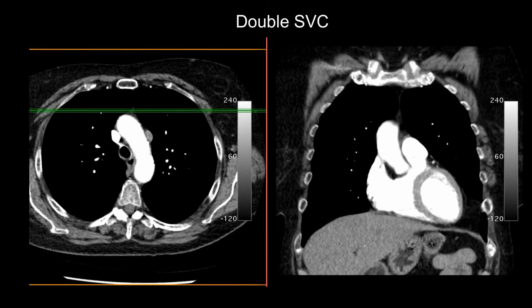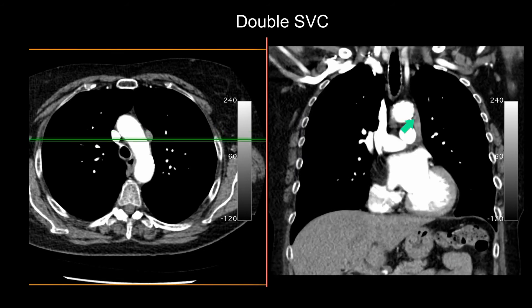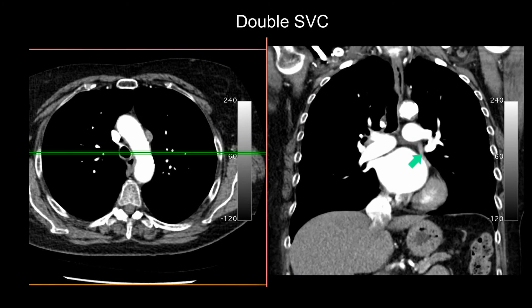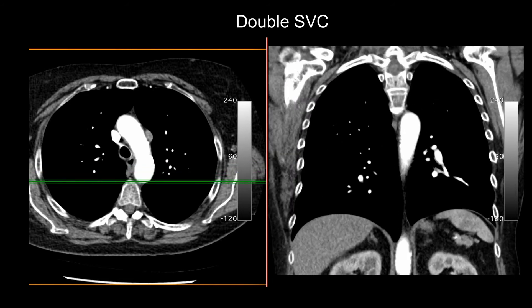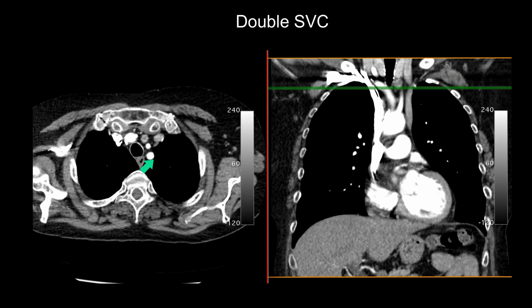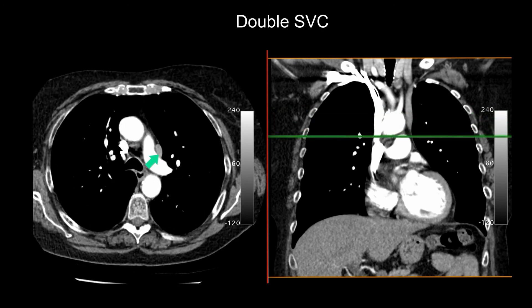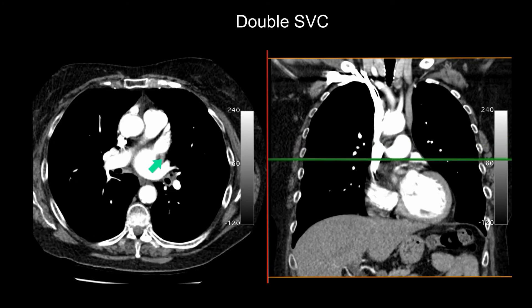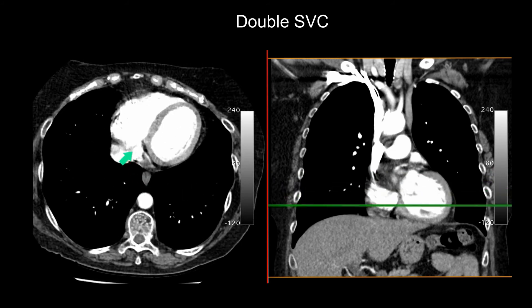Left-sided SVC. It is much more common to have a double SVC than to have a solitary left SVC. Here is a left-sided SVC in a patient who also has a right-sided SVC. You can see that it is going behind the left atrium and joining up to the coronary sinus, which then drains into the right atrium. Here is the axial aspect. There is the left SVC. There is the right SVC. It goes lateral to the pulmonary trunk, jumps behind the left atrium, and joins to the coronary sinus which then drains into the right atrium.